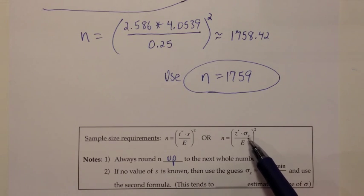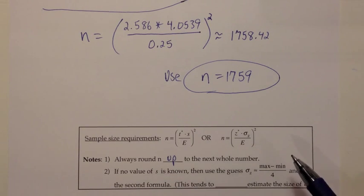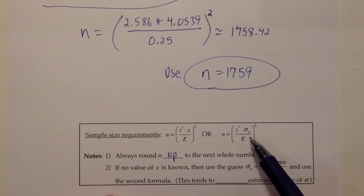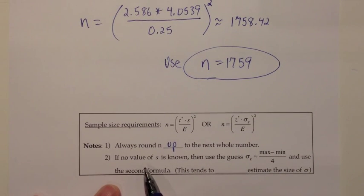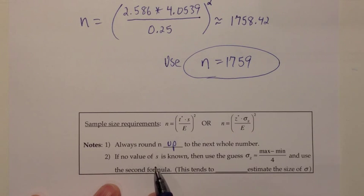You might remember we did the P guess in section 8.2, so that's kind of similar here. Now we need a strategy for how do you guess at sigma. That's all taken care of here in the second note.